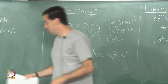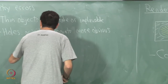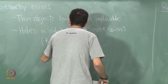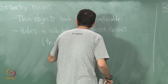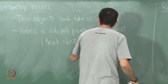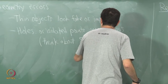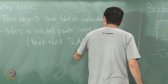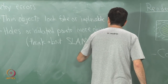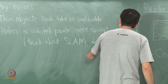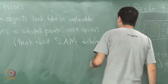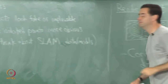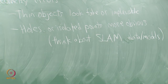Any kind of model generated automatically — for instance from SLAM data — may look worse in VR. Think about models you might have generated from SLAM or simultaneous localization and mapping data.